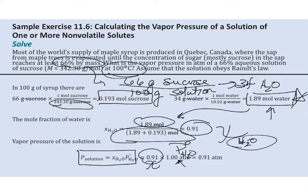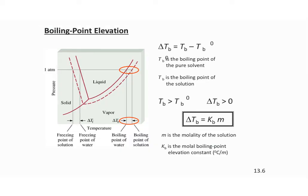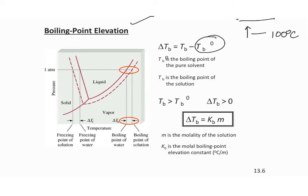Another colligative effect is boiling point elevation. Whatever the boiling point was for the pure solvent — for water that's 100 degrees — once you add a non-volatile solute, the boiling point is going to elevate or increase.